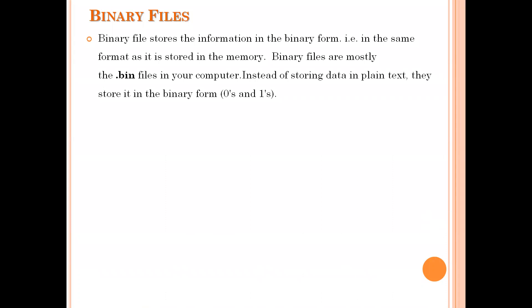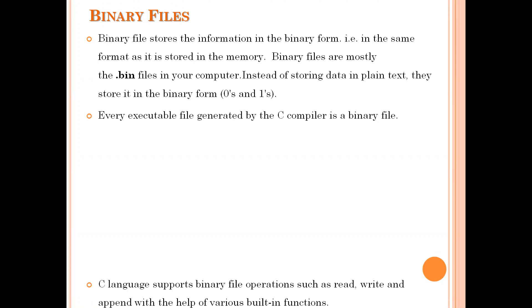Let me explain what a binary file is. A binary file stores information in binary format. The content in a binary file will be in machine-readable format — data is stored in the form of zeros and ones. Generally, binary files are mostly executable files. Whenever you compile your C program .c file, you get a .exe file. That .exe file is a binary file. Binary files are difficult for humans to understand; they are understandable only by machines.